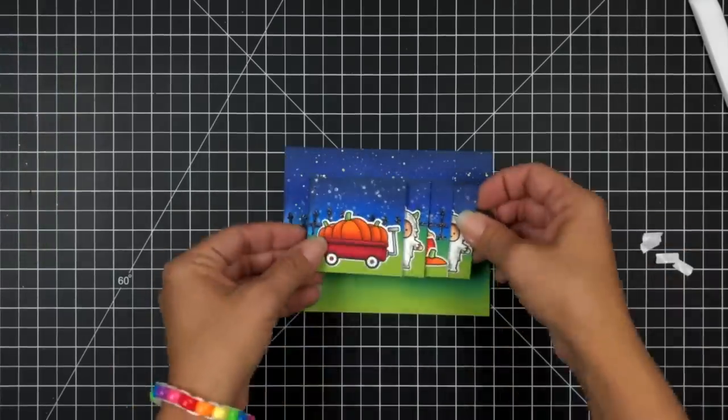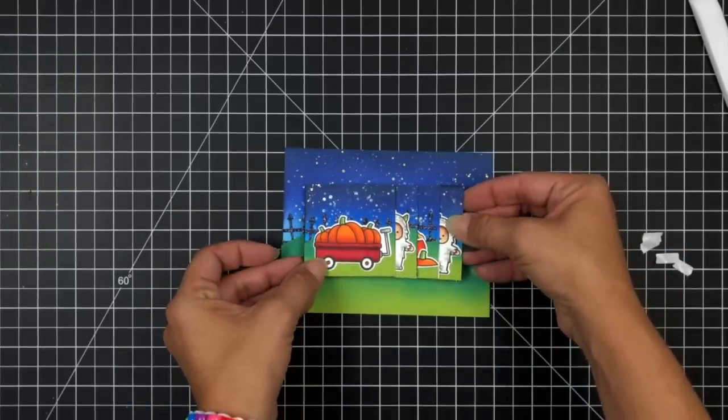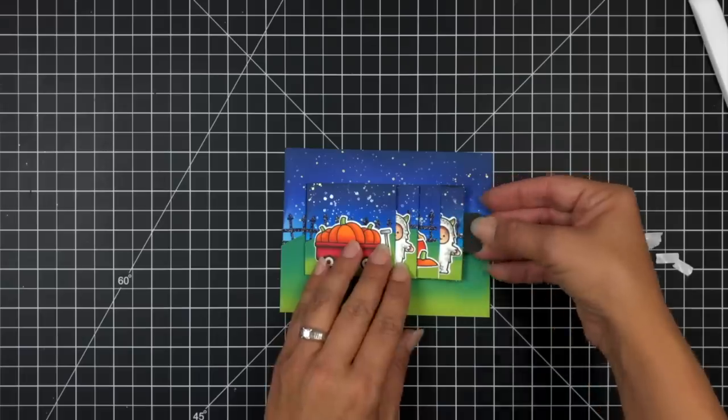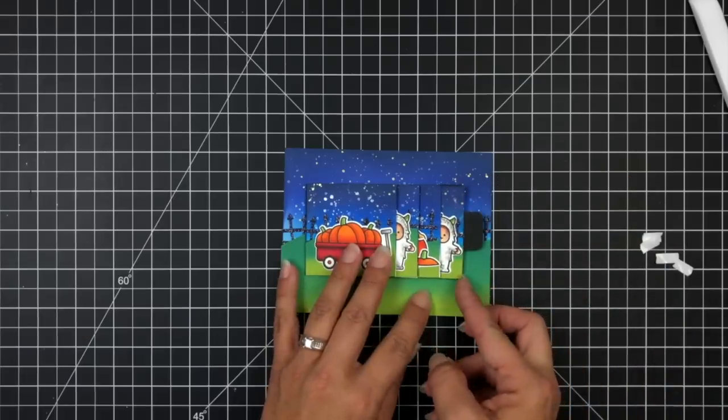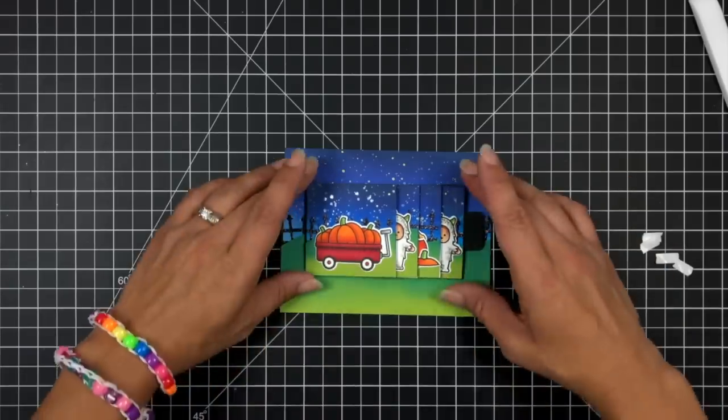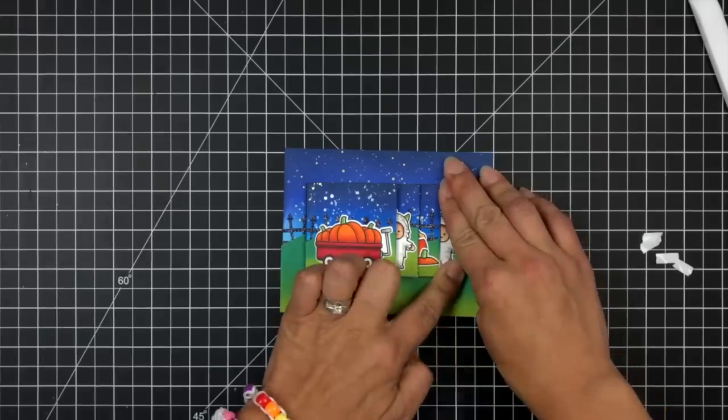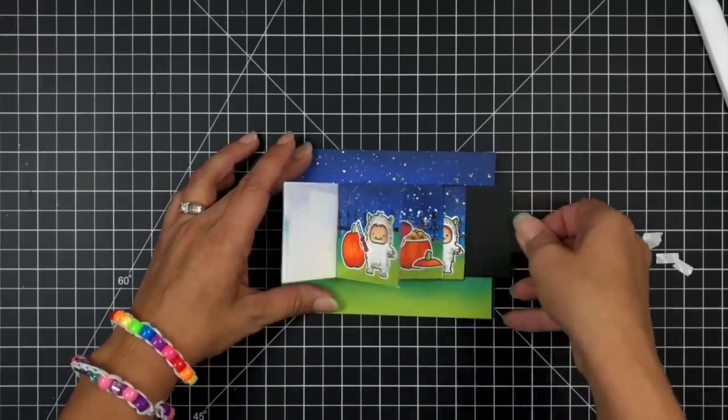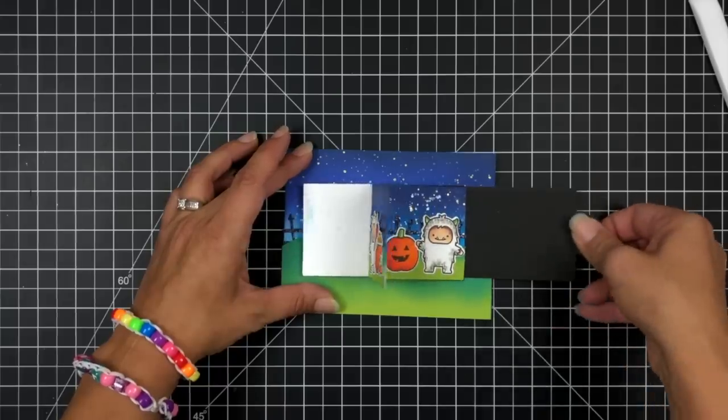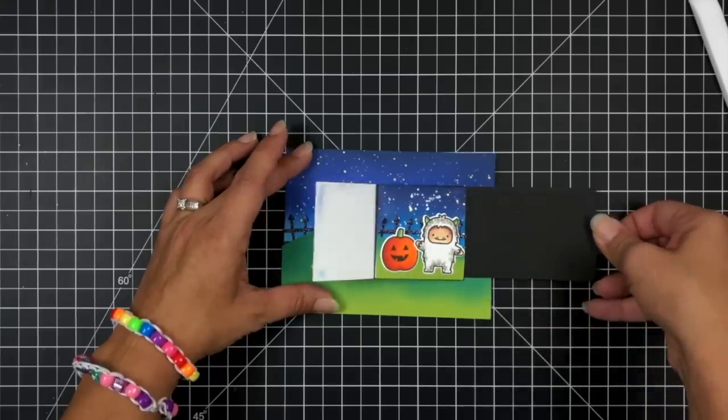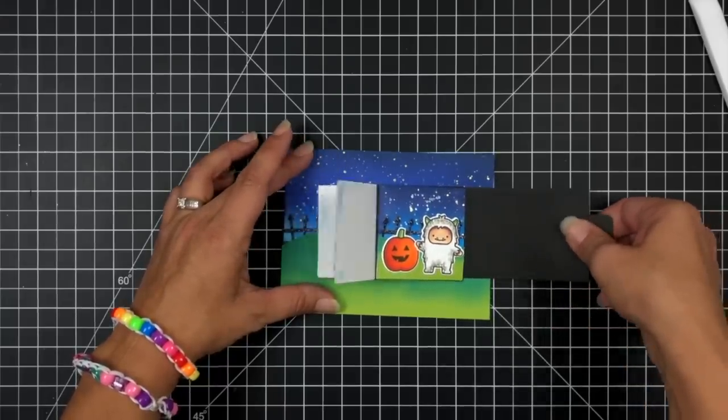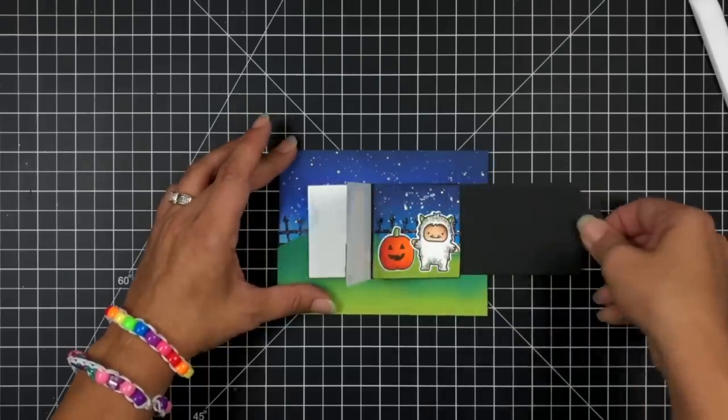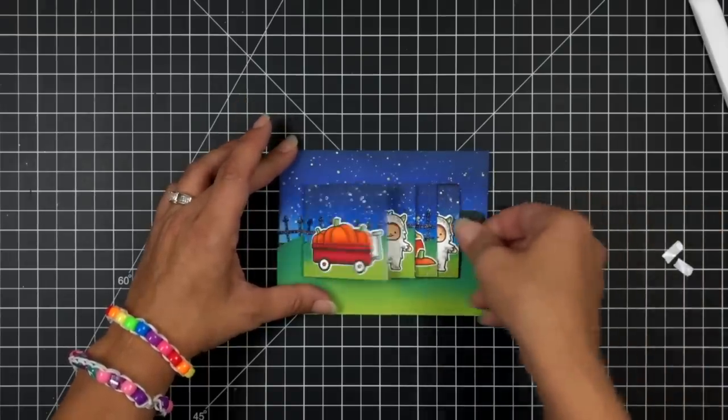I'll go ahead and remove the backing on that and this actually worked out really well that my fence kind of lined up where I wanted it to. That was pure luck. I did not plan that and it's also leaving me room on the top and the bottom for a sentiment. So then I can test this out sliding that through for this fun little scene and that's all that's holding it in place are those two tabs which I think is just brilliant.